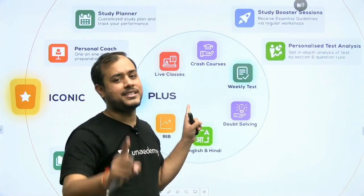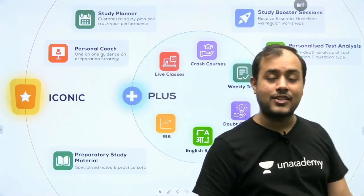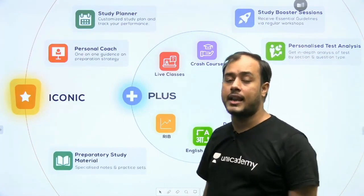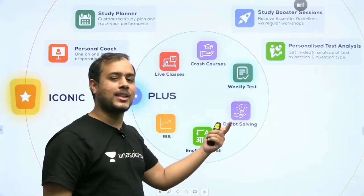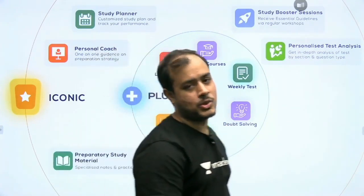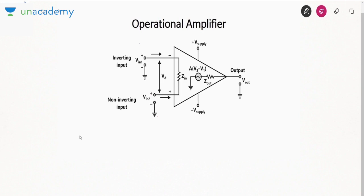Let's move on to the lecture. In the previous video I told you about the different types of amplifiers: voltage amplifier, current amplifier, transconductance amplifier, and transresistance amplifier. From this lecture onward, we'll be starting our study of the operational amplifier or op-amp. We'll be directly diving into the topic and understanding how op-amp is constructed and how circuits based on op-amp work.